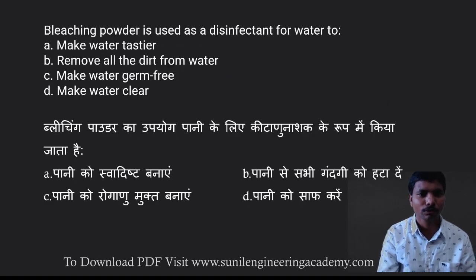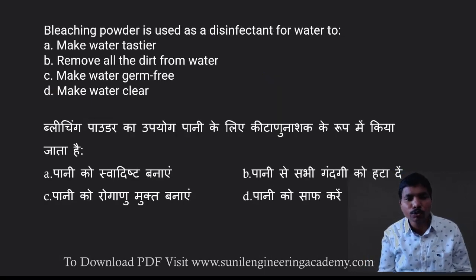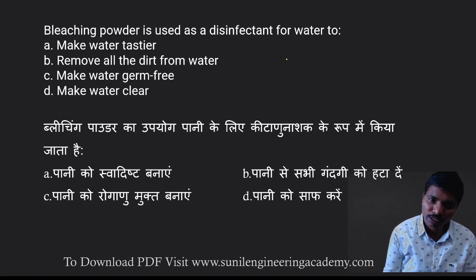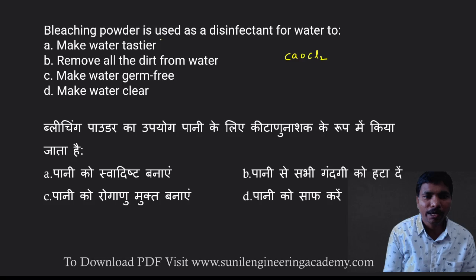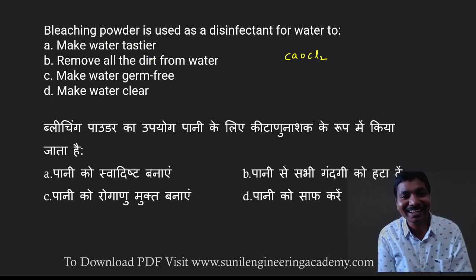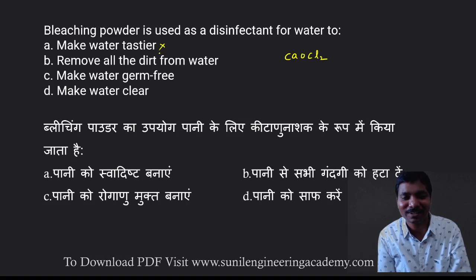Now coming to the first question. Bleaching powder is used as a disinfectant for water to — what? Bleaching powder has the chemical formula calcium oxychloride, CaOCl2. Why are we adding this bleaching powder into the water? If you add some bleaching powder, will the water become tastier? No, it may not become tastier. Instead it gives some smell.